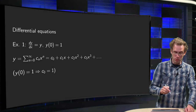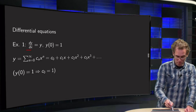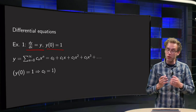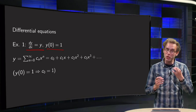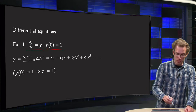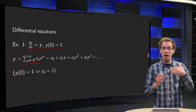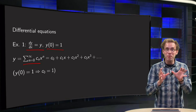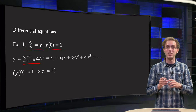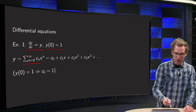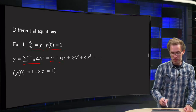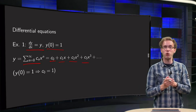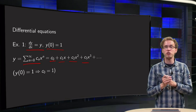We will do two examples. First we try to solve y prime equals y, with initial condition y(0) equals 1. We are looking for y(x) and we want to try a power series solution — that means we try y equals the sum from n=0 to infinity of c_n times x to the power n, and our aim is to find all those coefficients c_n. Writing out the first few terms: c0 plus c1·x plus c2·x² plus c3·x³ and so on.